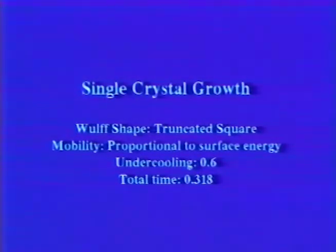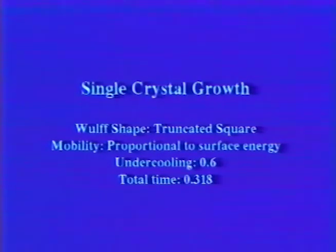In the next example, the wolf shape is still a truncated square, but the undercooling has been reduced. Note that side branch growth is much less dense.